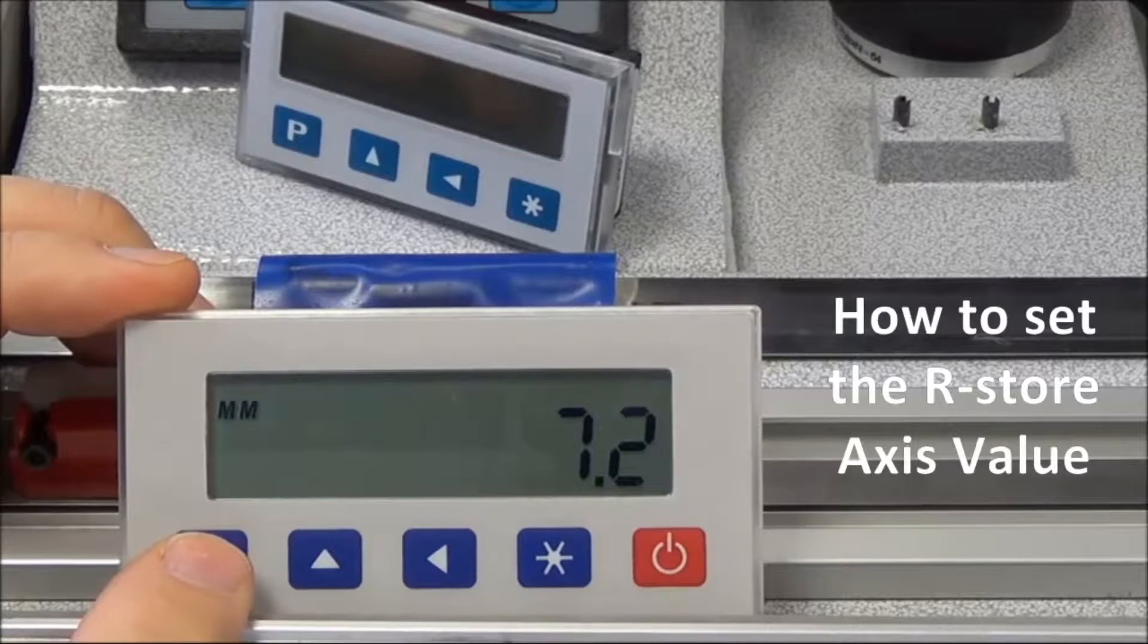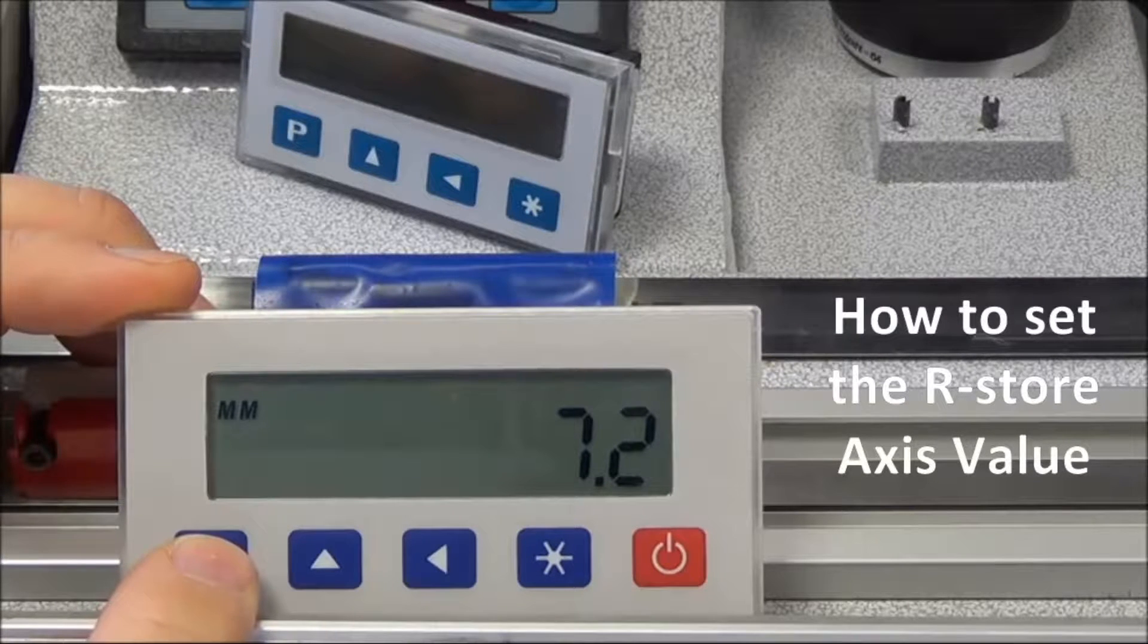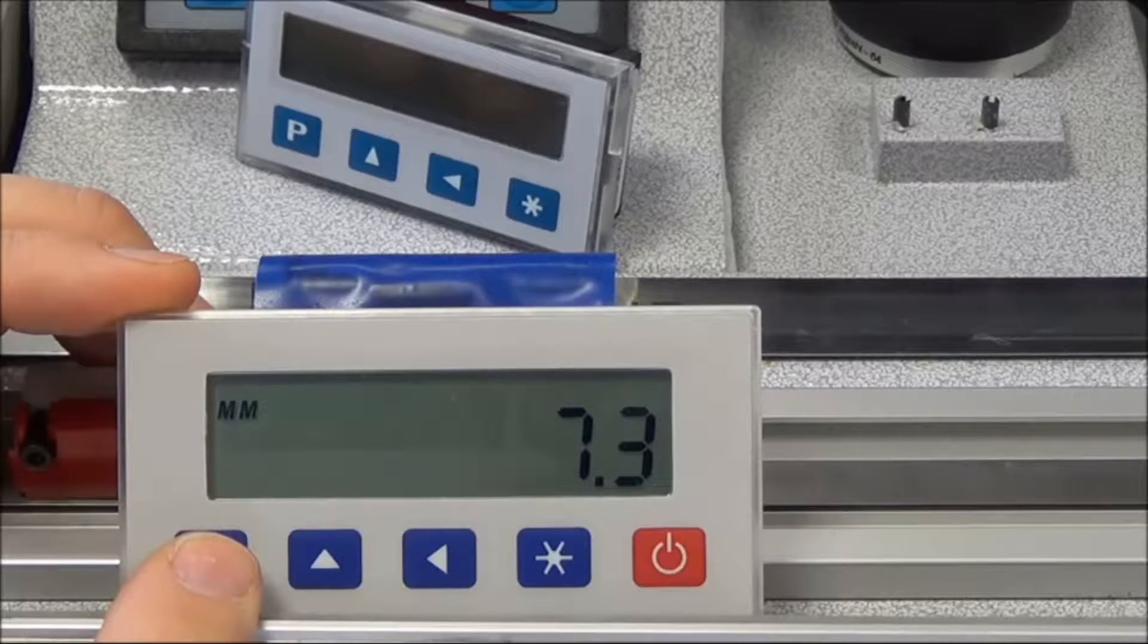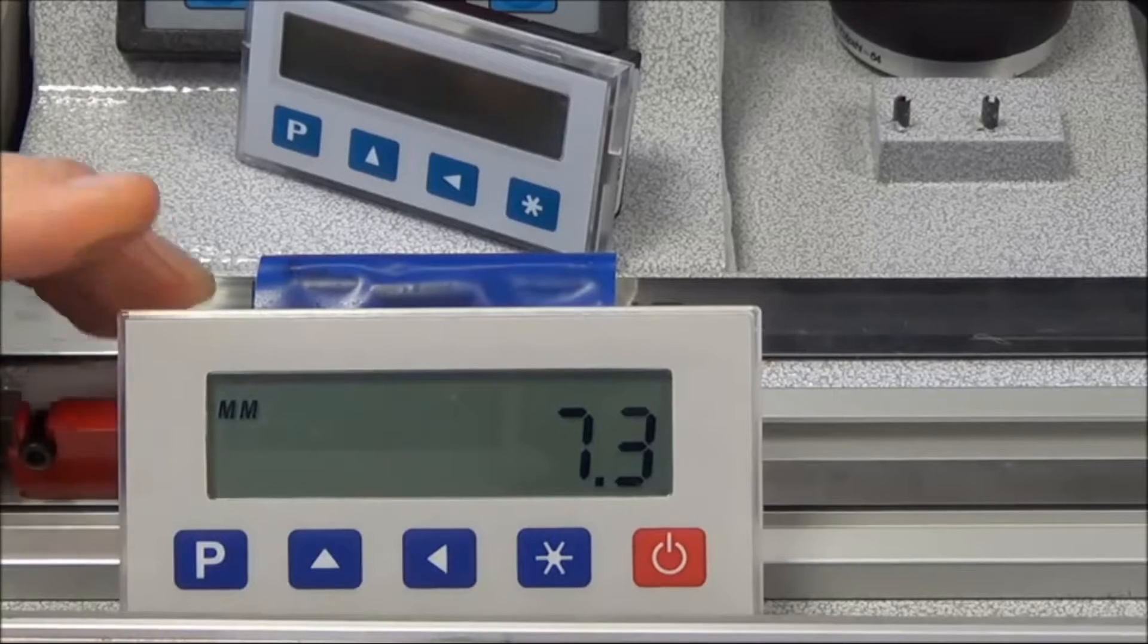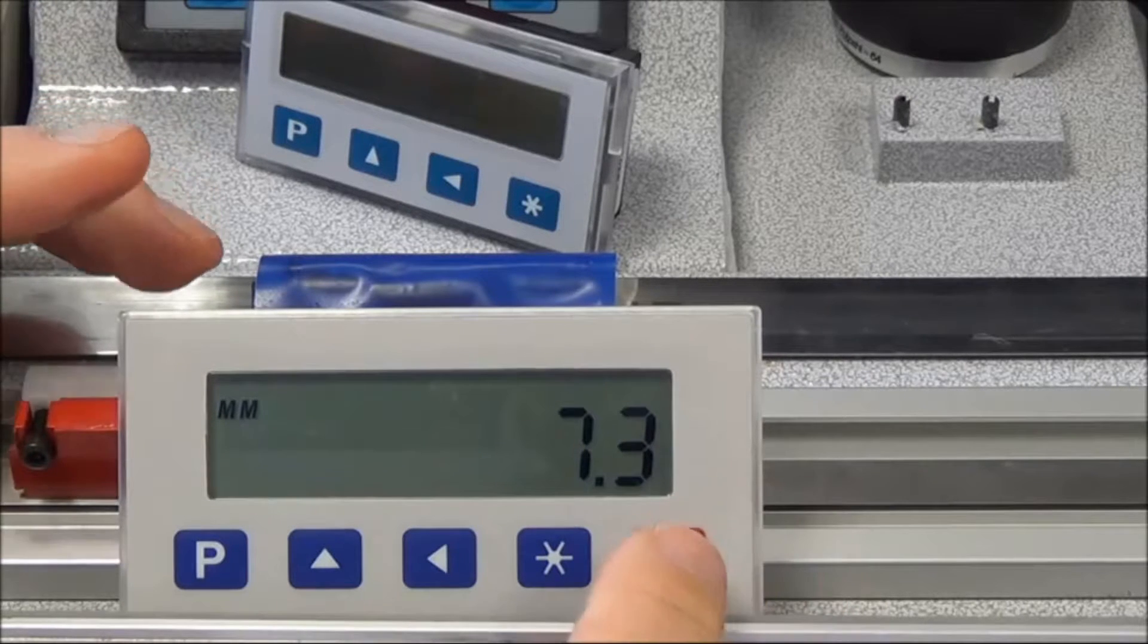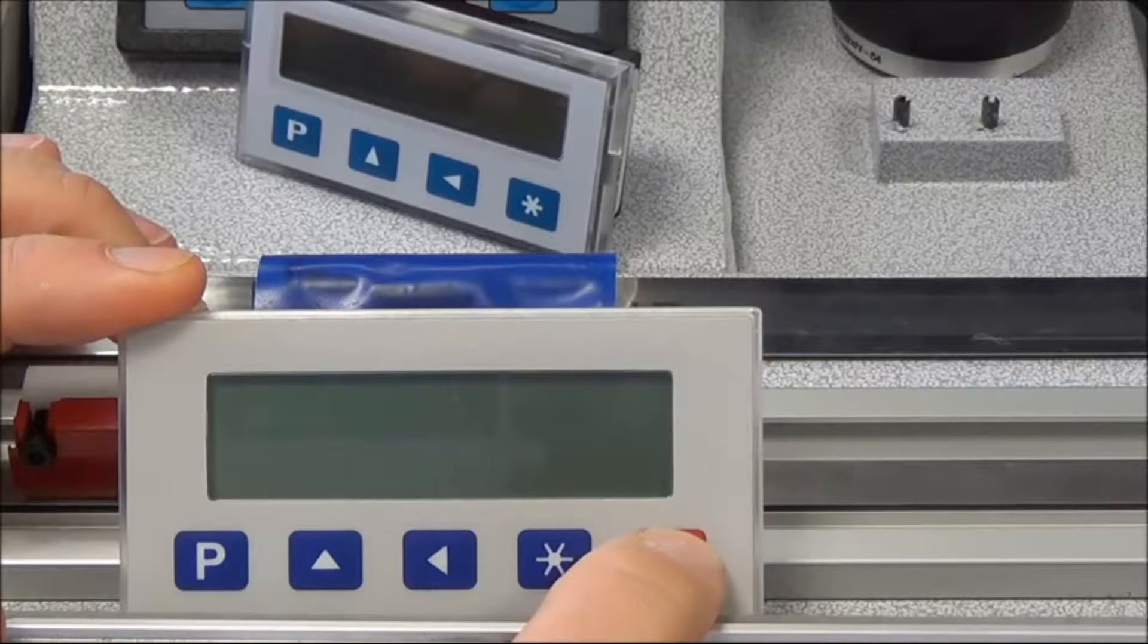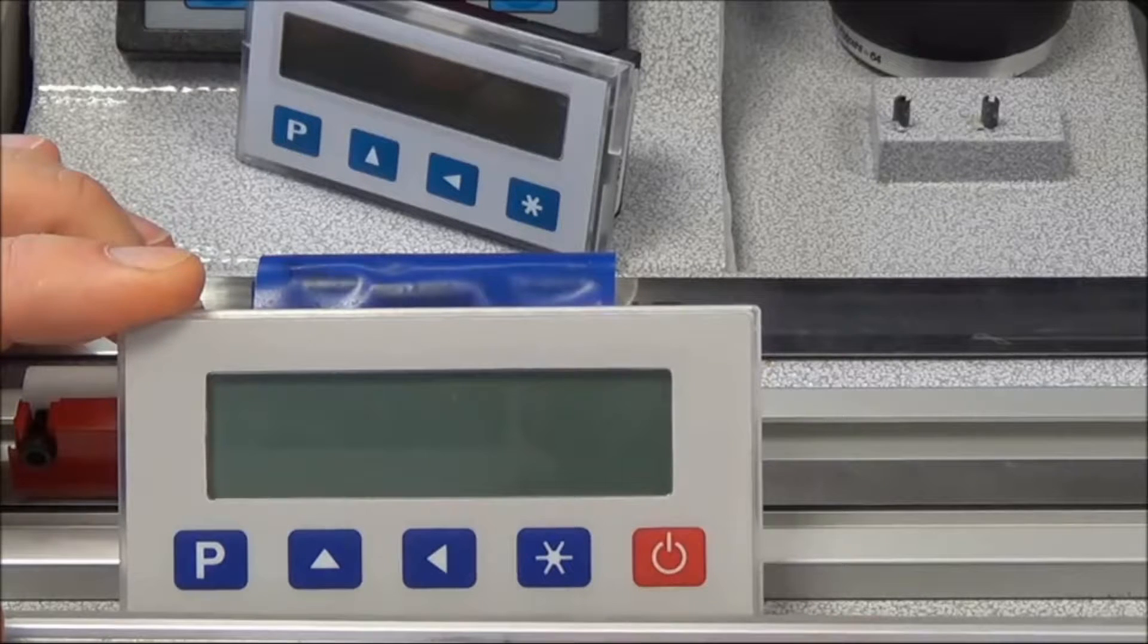With this video we'd like to show you how to set the parameter called R store and what this does is make sure that the value of the last position, for example 7.2, 7.3 where we are at the moment, when we switch the display on and off, that value is still there without any movement taking place.